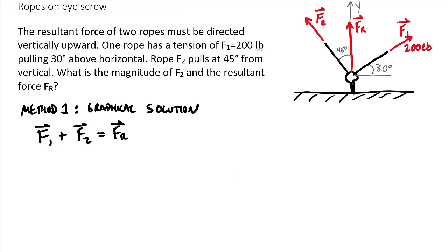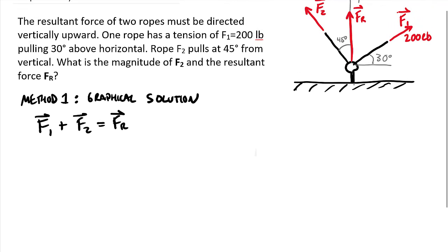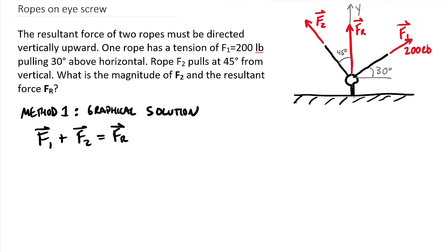What we can do is create a triangle based upon these three vectors. Let's start with F1, 30 degrees above horizontal. Now we need to add to it, going tip to tail. We add F2, noting that Fr needs to be vertical. So Fr needs to exist along this line here. As we add F2, it comes at 45 degrees from vertical, which is also 45 degrees from horizontal, and that gets us to the same place.